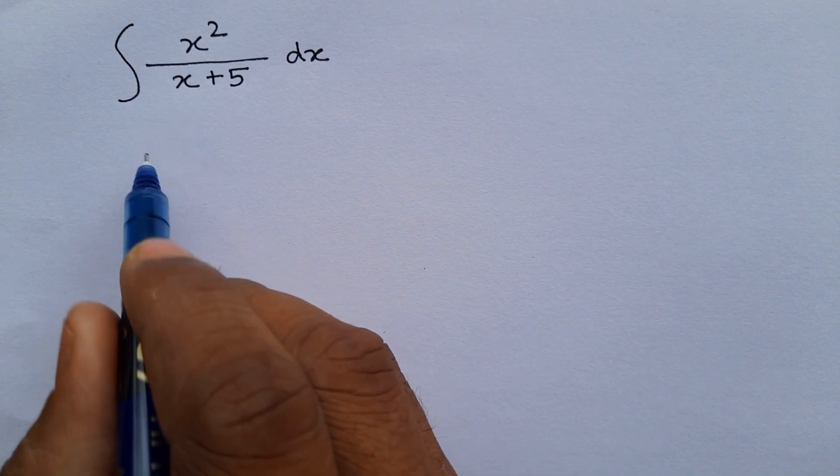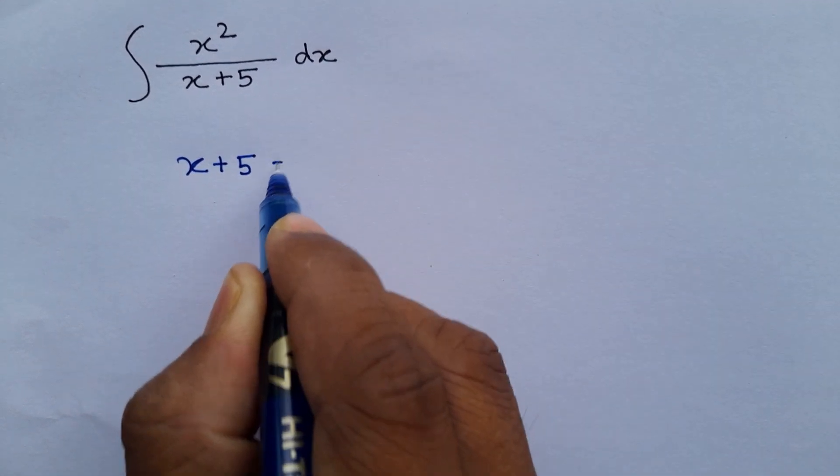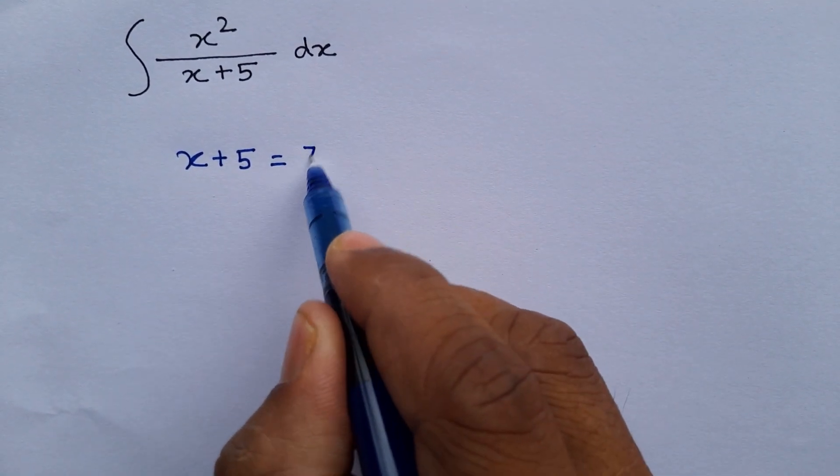What we have to do is substitute something for the denominator, that is x plus 5. Let us consider this as z.